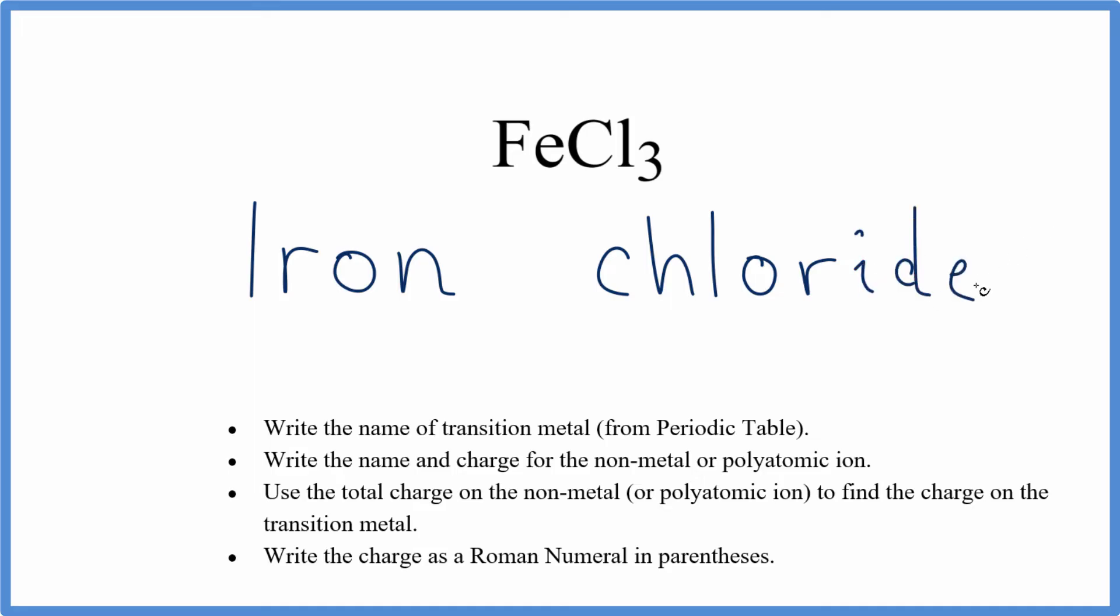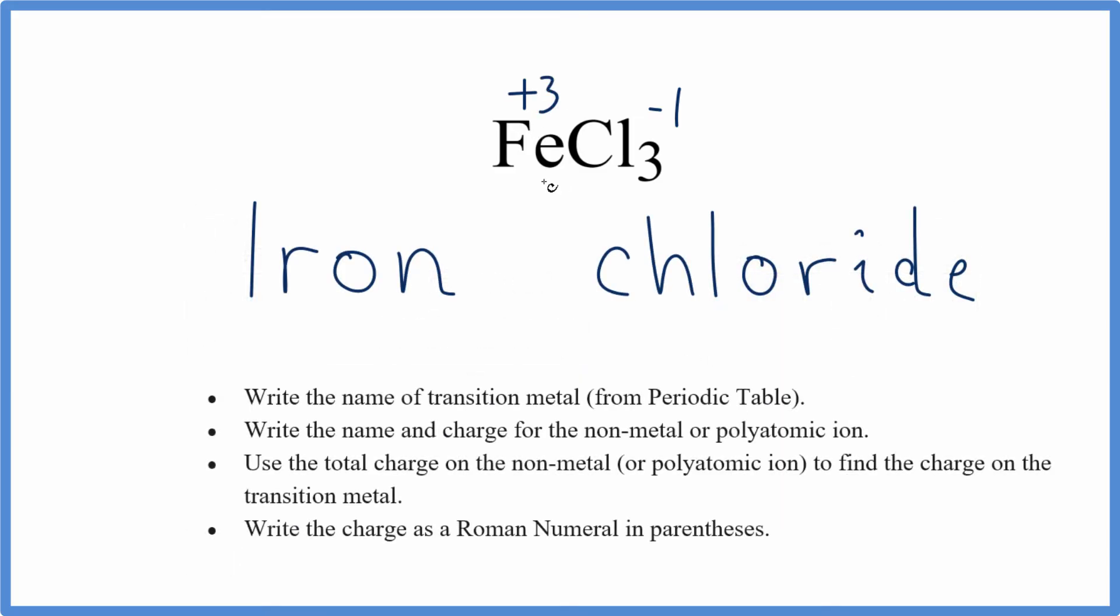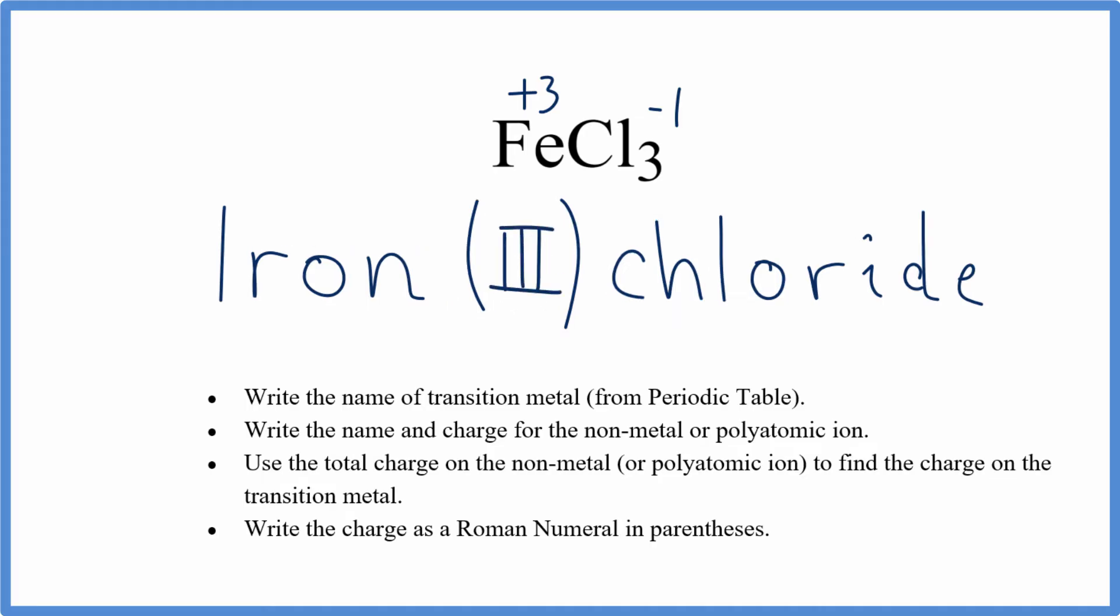So now we have iron chloride, and we go to our periodic table, and we see that chlorine has a negative 1 charge. We have 3 chlorine atoms, 3 times minus 1, that gives us minus 3. So this one iron atom has to be a plus 3 to balance those out. So we write parentheses, and we write the Roman numeral 3. That makes the name for FeCl3, iron 3 chloride. And again, this 3 right here tells us that iron has a plus 3 charge.